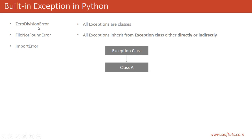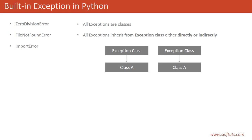ZeroDivisionError will either inherit from the Exception class directly or indirectly. For example, suppose there is an Exception class and there is class A. If I want to create another exception class B, I can have class B inherit from class A — meaning class B is a child of A, and A is a child of Exception. So class B inherits from Exception indirectly, while class A inherits from Exception directly.